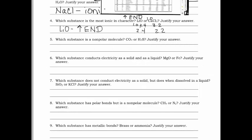Question five: which substance is a nonpolar molecule? Both options have polar bonds since they involve two different non-metals. You need to draw them to figure it out. CO2 is linear — you should have that memorized. H2S is similar to water since sulfur is in the same group as oxygen, so it's bent. Nonpolar molecules are symmetrical, so the answer is CO2. You can justify by saying it is symmetrical.